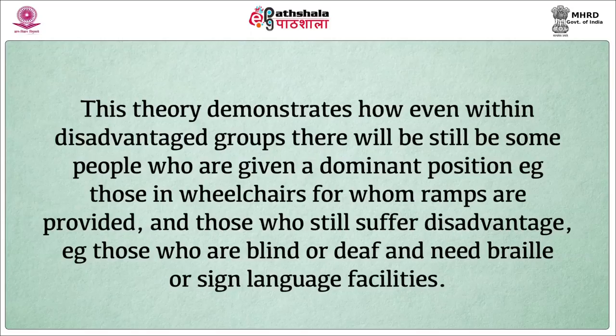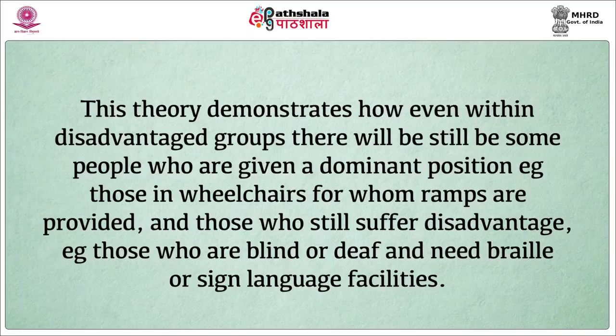Critiques of the theory argue that as it aims to be inclusive of multiple factors, it loses sight of specific circumstances and needs of certain groups. For example, if schools, workplaces, and public offices are expected to have ramps to ensure they are wheelchair accessible for differently physically abled people, should they also be equipped with braille and signing facilities for blind and deaf people? This demonstrates how even within disadvantaged groups, some people are in a dominant position — those in wheelchairs for whom ramps are provided will be less disadvantaged than those unable to read braille or access sign language interpretation.